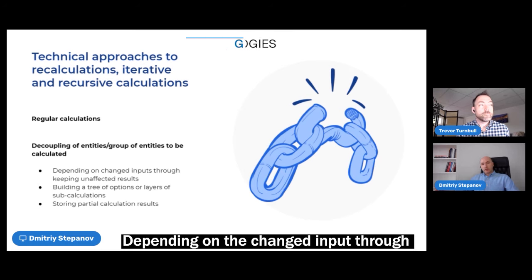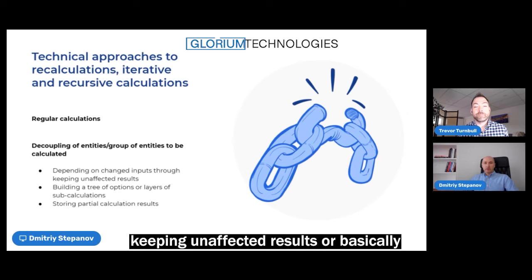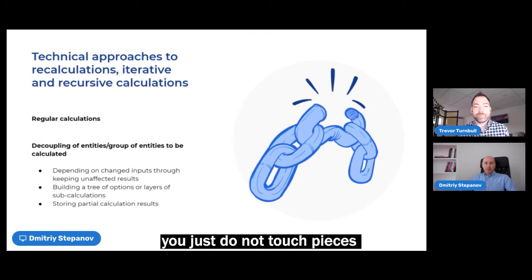Depending on the changed input through keeping unaffected results, so basically you just do not touch pieces that are not changed. You can create tree options that can actually help you to decide which sections needs to be calculated in which case is not.